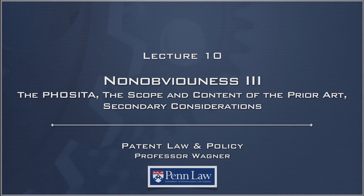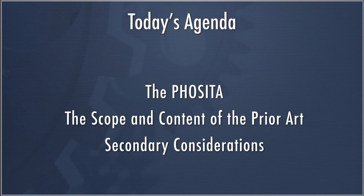This is Lecture 10, Non-Obviousness 3. This lecture has three components. We're going to talk about the person having ordinary skill in the art, how that person is defined, where the controversies usually lie, and talk some about the strategy involved in litigation in terms of setting this hypothetical person having ordinary skill in the art.